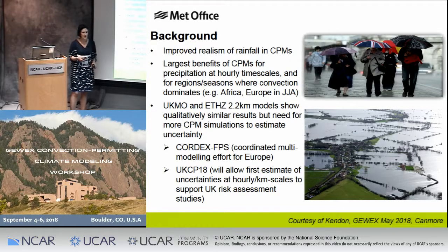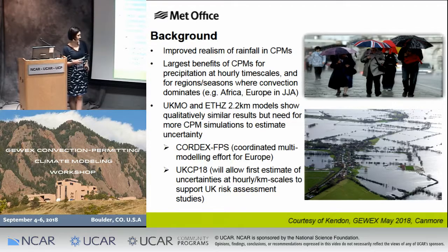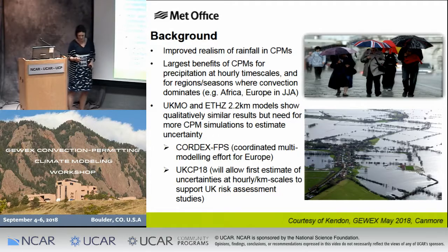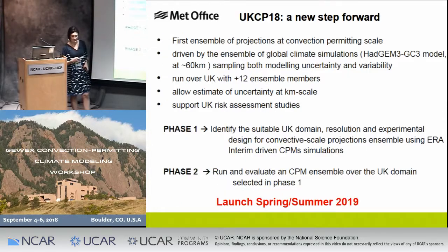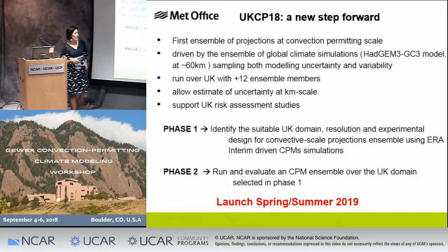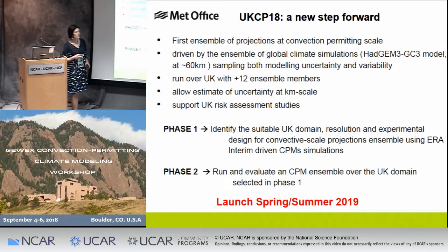What is missing now is to estimate uncertainty at the convection-permitting scale. In this context we have the CORDEX FPS that Stefan presented before me, and then there is the UKCP18 project I'm going to talk about. That is going to be the first ensemble of projections at convection-permitting scale, driven by an ensemble of global climate simulations at 60 km, sampling both model uncertainty and variability. It is run over the UK only, with 12 members, to estimate uncertainty at km scale to support the UK risk assessment.